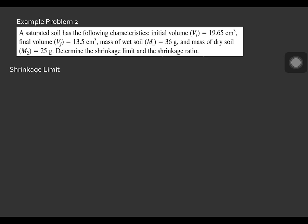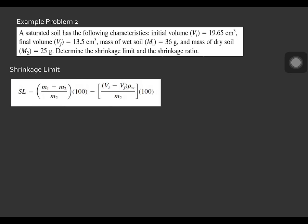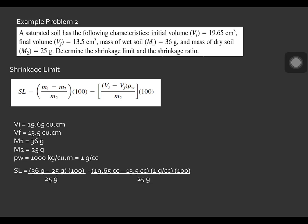The formula for the shrinkage limit is as shown on screen. To solve, let us first identify the variables: VI equals 19.65 cm³, VF equals 13.5 cm³, M1 (mass of wet soil) equals 36 grams, and after oven drying, the mass of dry soil is 25 grams. The density of water is 1 g/cm³. Substituting these values into the equation, we get the shrinkage limit equal to 19.4%.